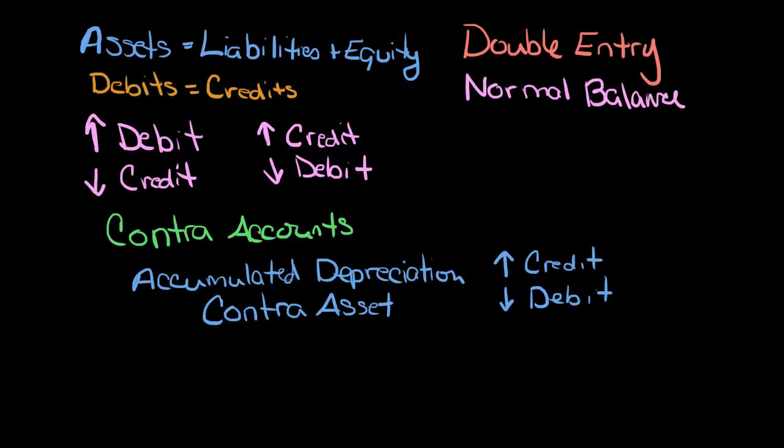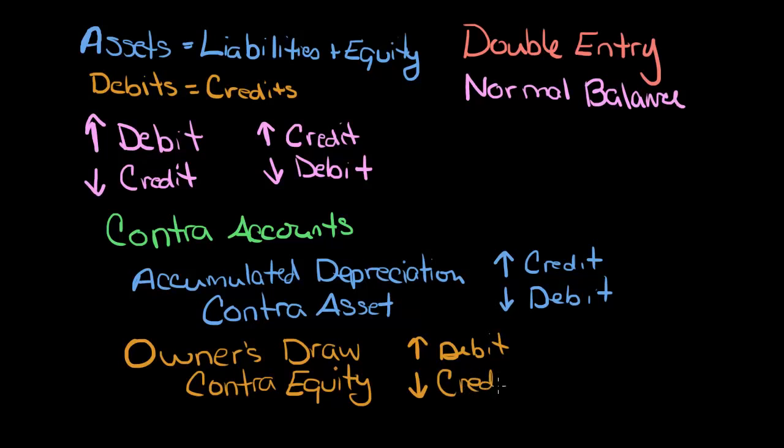Another contra account that we see a lot is owner's draw. Owner's draw is a contra equity account. So when owners take money out of the company, it decreases their equity. So being a contra equity account, when the account increases, we debit the account. And when it decreases, we credit the account. So a contra account always works the opposite way of your regular balance accounts.